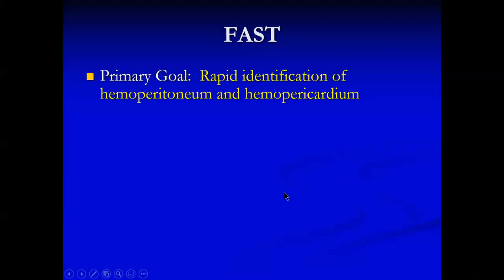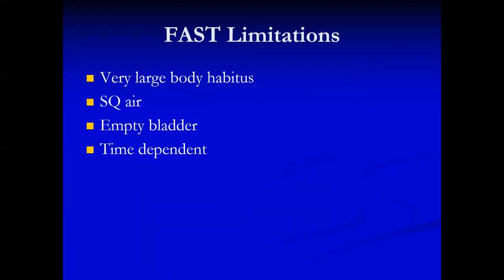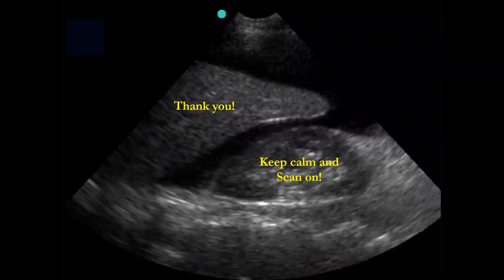So, our FAST exam: the primary goal is to find the blood. There's an extended exam where you look at a lot more. Remember, you're not going to find all of the pathology. Limitations: large body habitus, subcutaneous air, empty bladder, and it is a time-dependent study. Take-home points: free fluid does not necessarily equal blood; fluid takes the shape of the container surrounding it; blood clots; free fluid in the left upper quadrant view is often subdiaphragmatic; and you need to interpret the FAST in the clinical context. And in exactly 20 minutes, we're done. Thank you — keep calm and scan on.